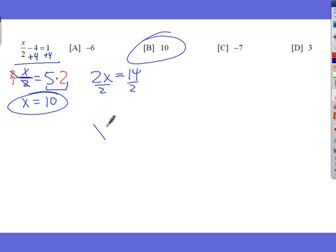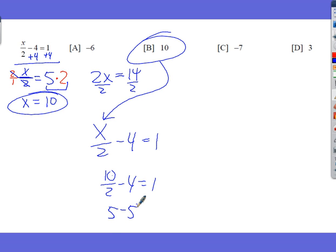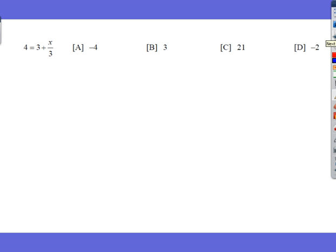You can go back to the original equation, if in doubt, and check it and see if you've got the right answer. You put the 10 in here. So it's 10 ÷ 2 - 4 = 1. 10 divided by 2, or 10 over 2, reduces to 5 over 1, or just 5. 5 - 4 is supposed to equal 1. And in fact, it does. So it's the right answer. And on the next one, I'm going to show you with the calculator how to verify it.